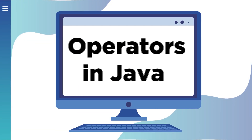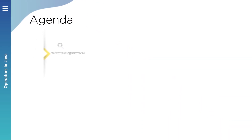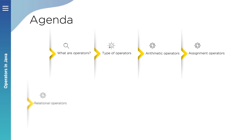Today we will talk about operators in Java. An operator is a symbol that performs a specific kind of operation on one, two, or three operands and produces a result.